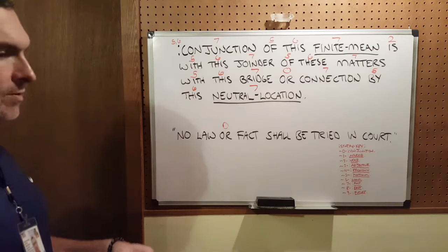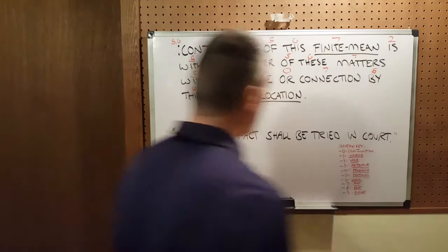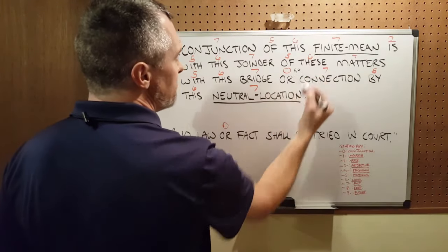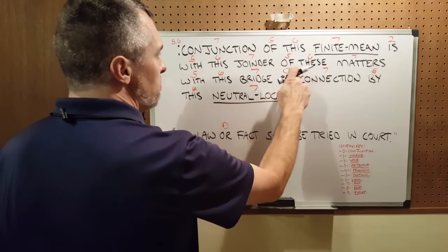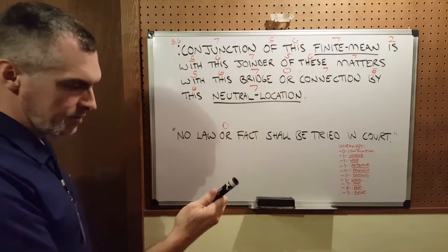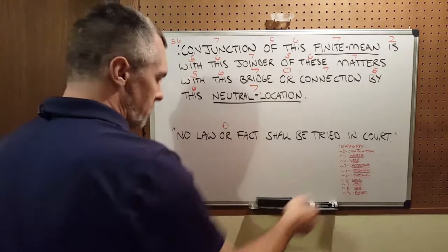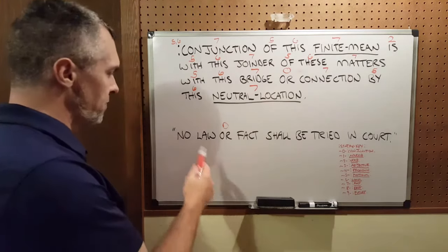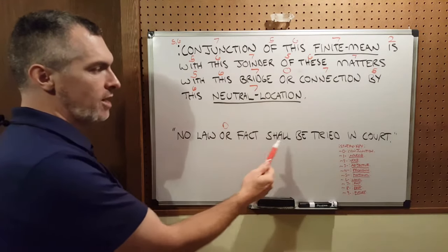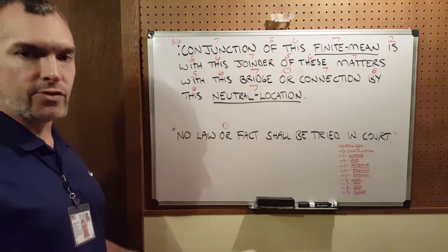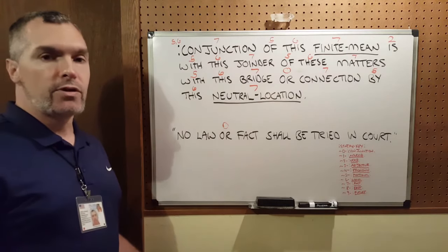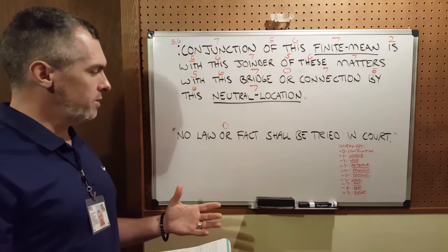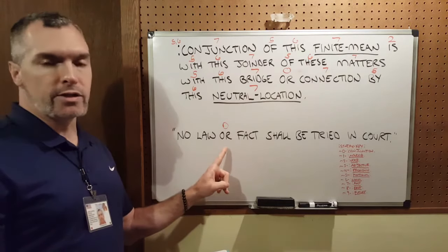I like to simplify matters. In this instance you could also do this, and then you would also have another five, six right there, but I feel simplification is best, so I leave it at that. Now, in the plain English fiction babble language, I'll syntax this sentence: 'no law or fact shall be tried in court.' I've seen several ways of doing it. I myself did it differently until I gained more knowledge on the closures of what a conjunction actually is.